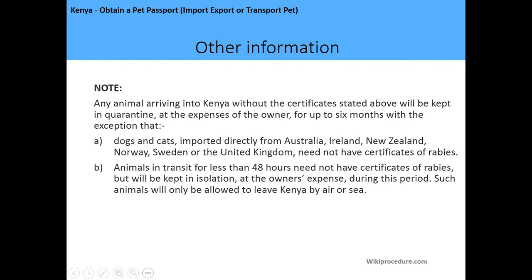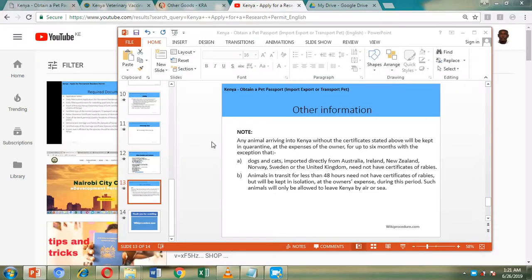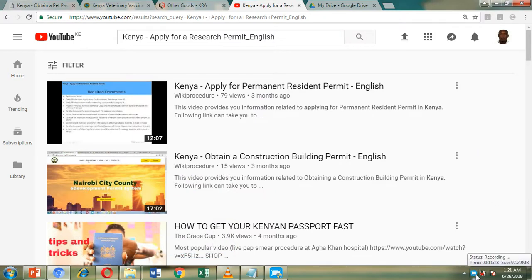Animals will only be allowed to leave Kenya by air or by sea. To get your animal vaccinated, the production unit of the Kenya Veterinary Vaccines Production Institute located in Kabete is where you go. You can also contact their other offices for more information. For the Kenya Revenue Authority, visit their website at www.kra.go.ke — apologies for any typo shown earlier.